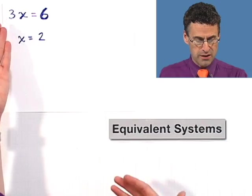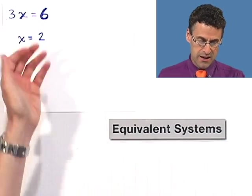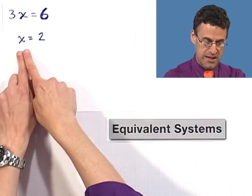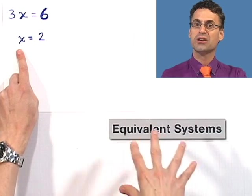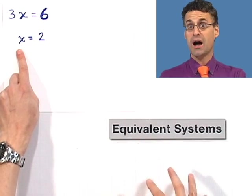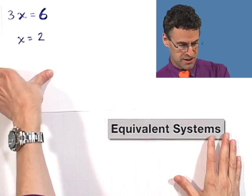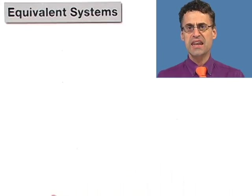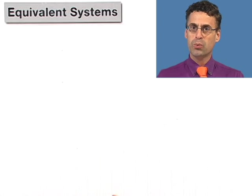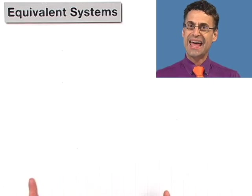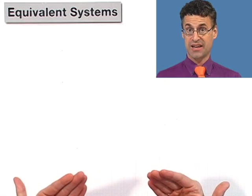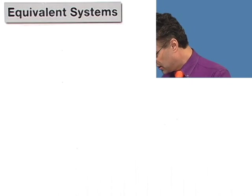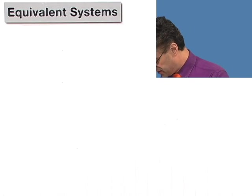What did we do here? Well we started off with something complicated and we massaged it until it became something we can just read off the answer. We're going to do the exact same thing here with more complicated systems. So let me just explain briefly what equivalent systems are. They're just any two systems which are literally equivalent, which means they have the exact same solution set. And as long as they have the same solution set, even if they look different, doesn't make a difference.